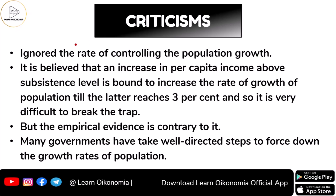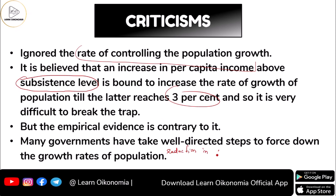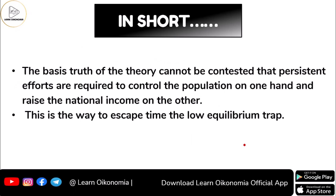Another criticism is that the theory ignores the specific rate at which population should be controlled. The theory holds that an increase in per capita income above a subsistence level will increase the rate of population growth until it reaches around three percent, making the trap very difficult to break. However, many empirical evidences run contrary to this, as many governments have taken well-directed steps to force reductions in population growth.